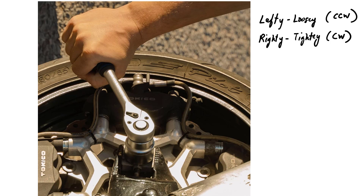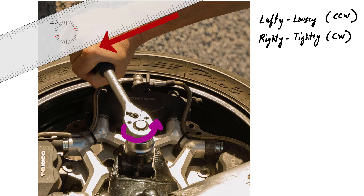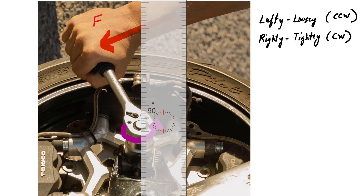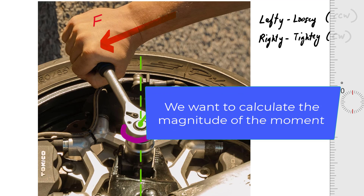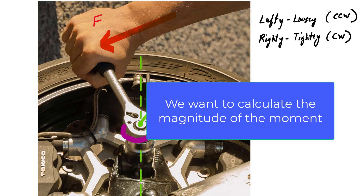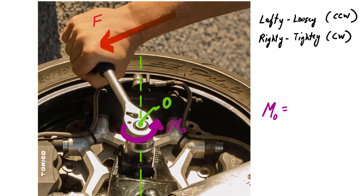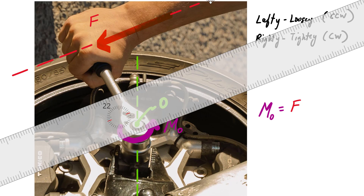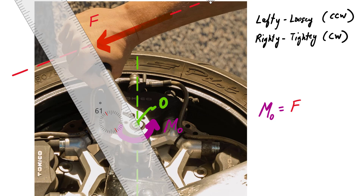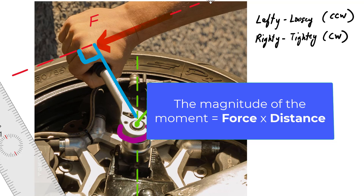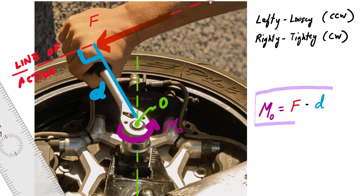If I want to loosen this bolt, I want to turn it in the counterclockwise direction. To make that turning effect, I've got to apply a force this way, and it will cause the bolt to turn about the axis of rotation at point O. The magnitude of that turning effect equals the magnitude of the force times the perpendicular distance from the line of action to point O. This is a 90-degree angle.